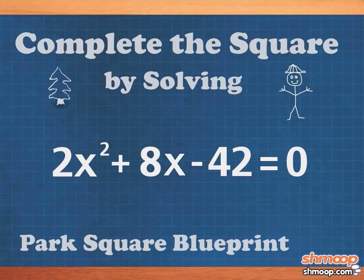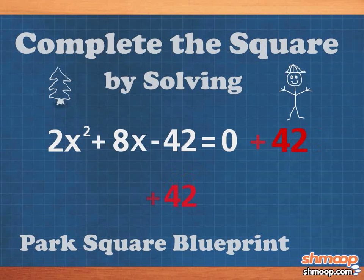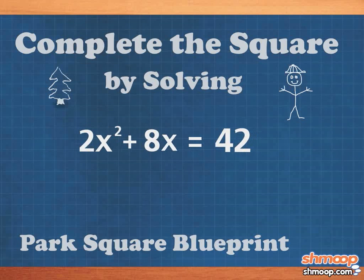2x squared plus 8x minus 42 equals zero. Okay, so to isolate all the x's on the left side, add 42 to both sides to get 2x squared plus 8x equals 42. Divide every term by 2 so that the number before the x squared is 1. x squared plus 4x equals 21.